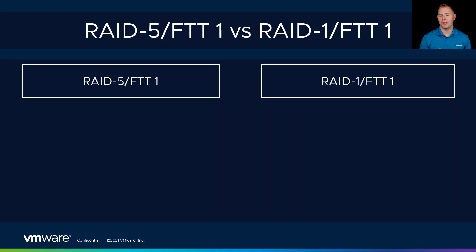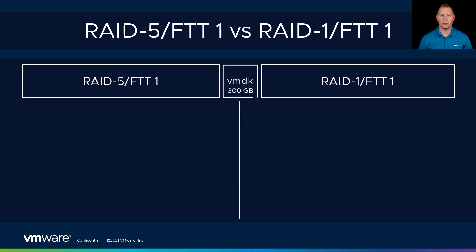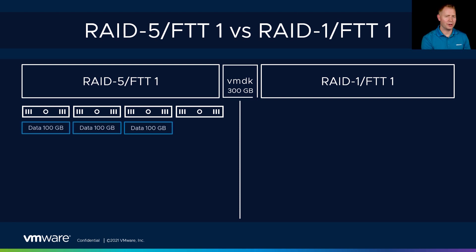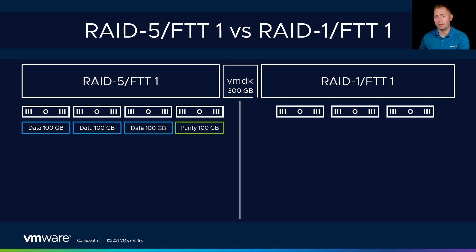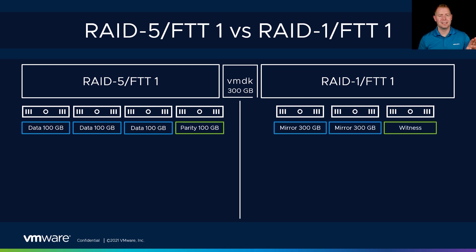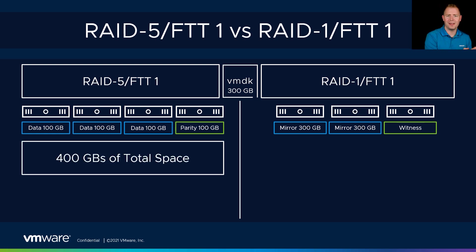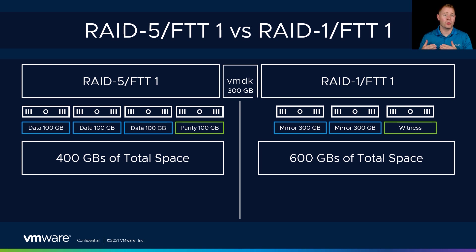Since we've been talking about sizes, let's compare our erasure coding policies to our mirroring policies. Starting with RAID 5 FDT of 1 versus RAID 1 FDT of 1: with a 300-gig VMDK, the RAID 5 policy uses 300 gigs for data plus 100 gigs for parity. Compared to our RAID 1 FDT of 1 policy, where one host has 300 gigs and the other host has 300 gigs — 600 gigs total. So 400 gigs with RAID 5 versus 600 gigs with RAID 1, for a 33% space savings.